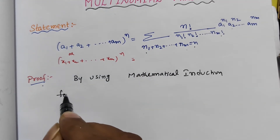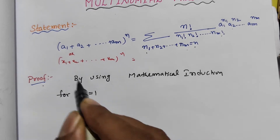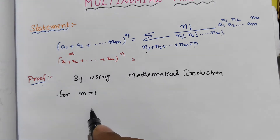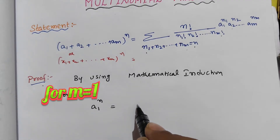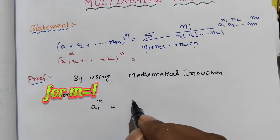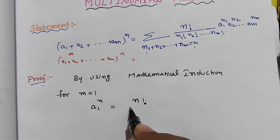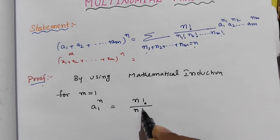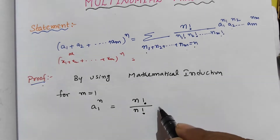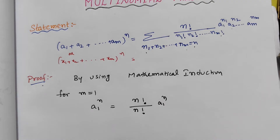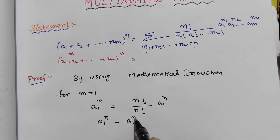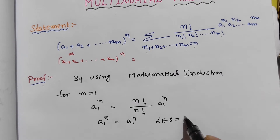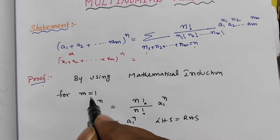For m=1, there is one term: a1. So (a1)^n is the LHS. On the RHS, the summation gives n! / n1! · a1^n1, and since n1 = n, the n factorials cancel, giving a1^n. Therefore LHS = RHS, so the given statement is true for m=1.